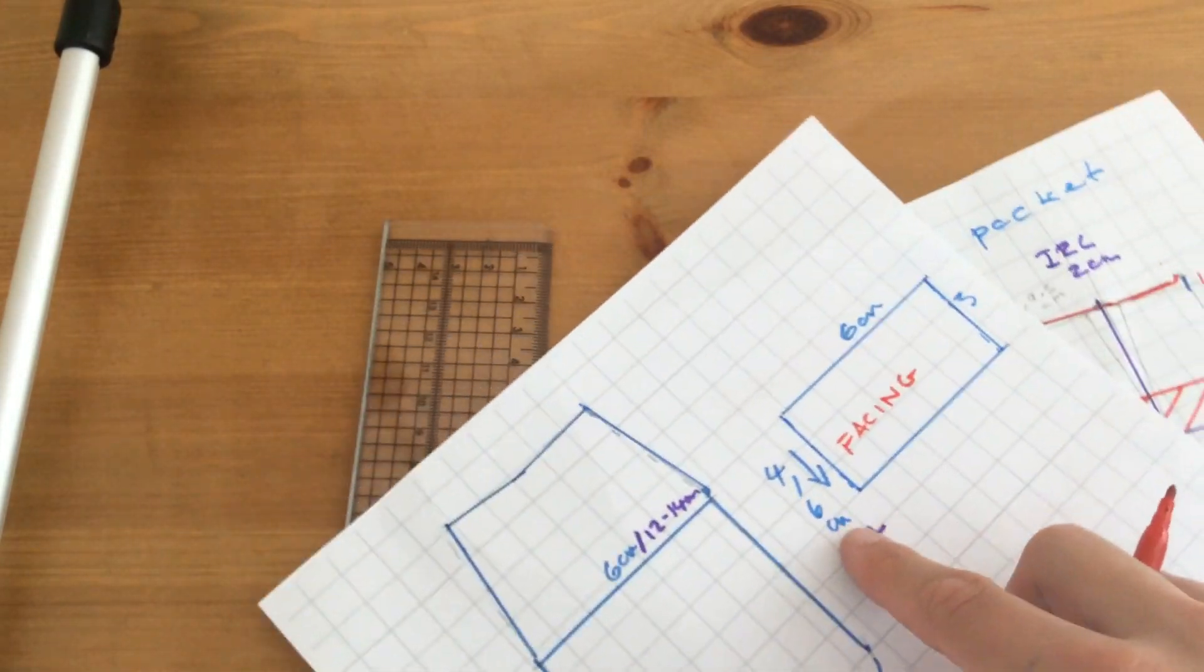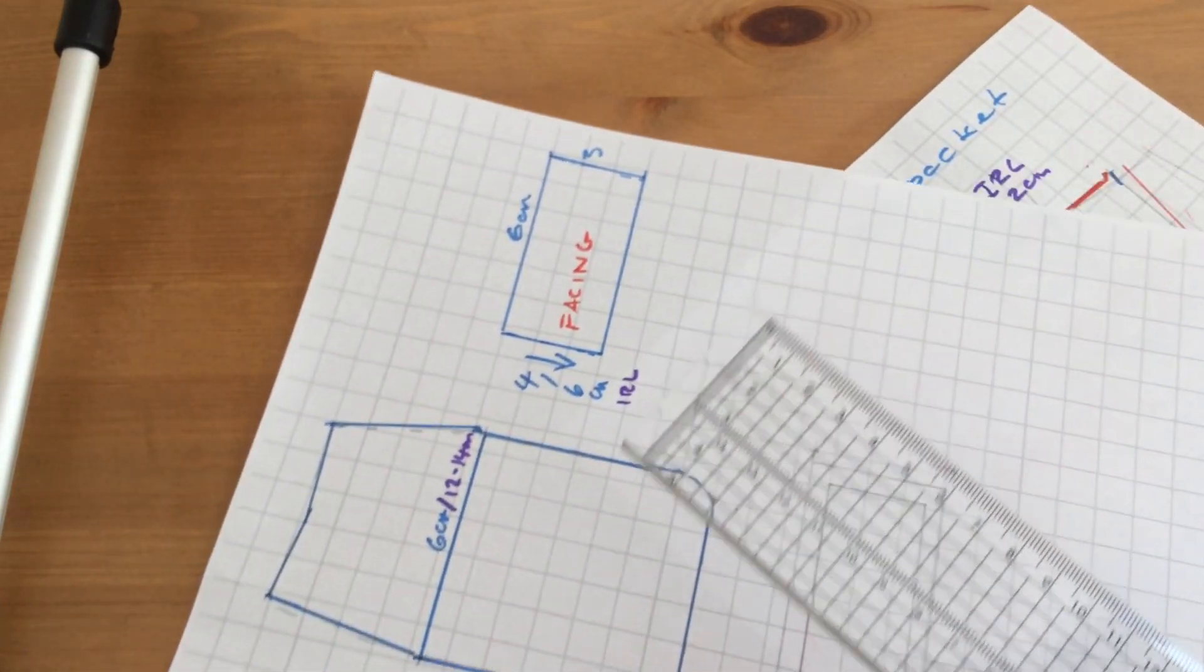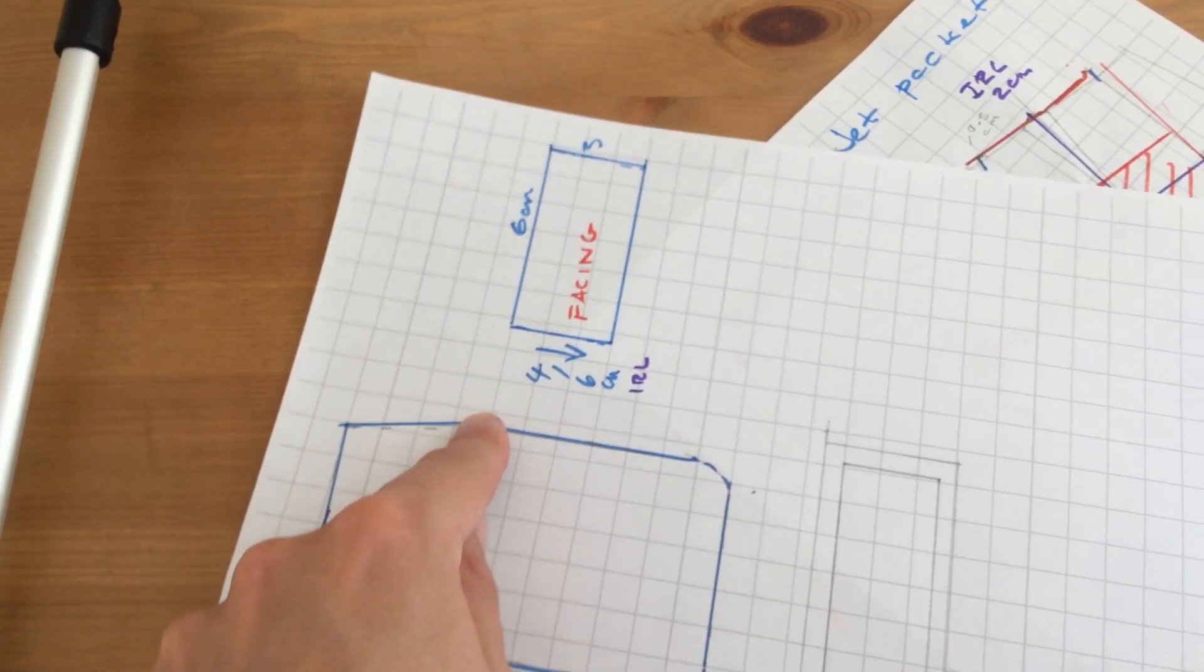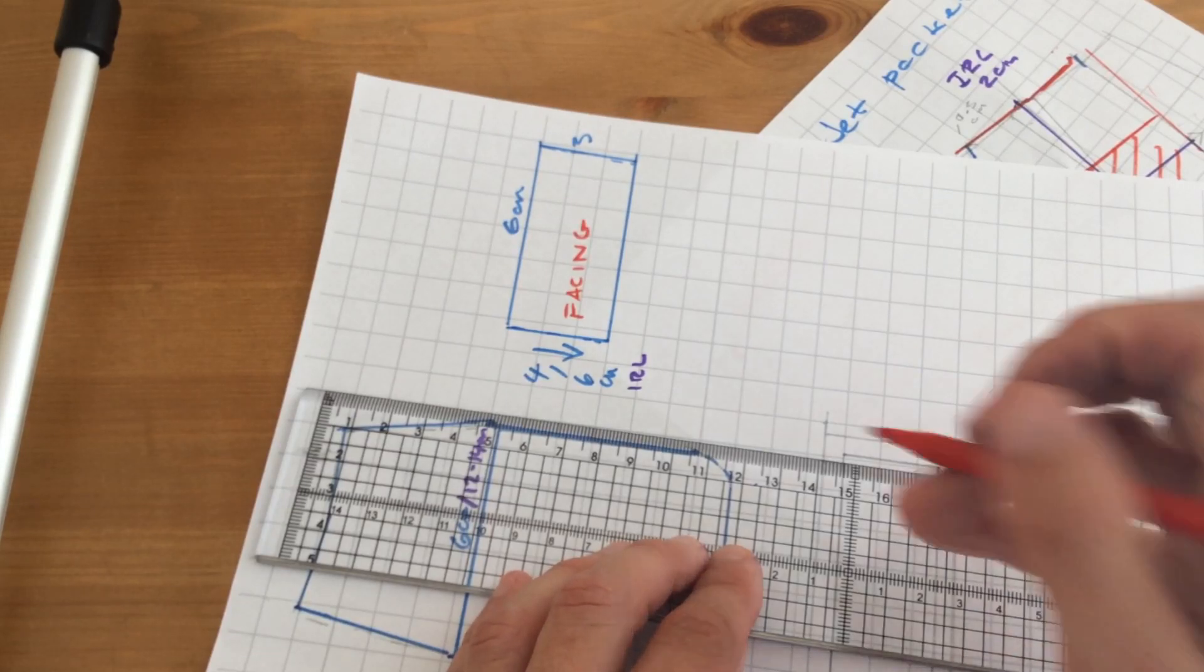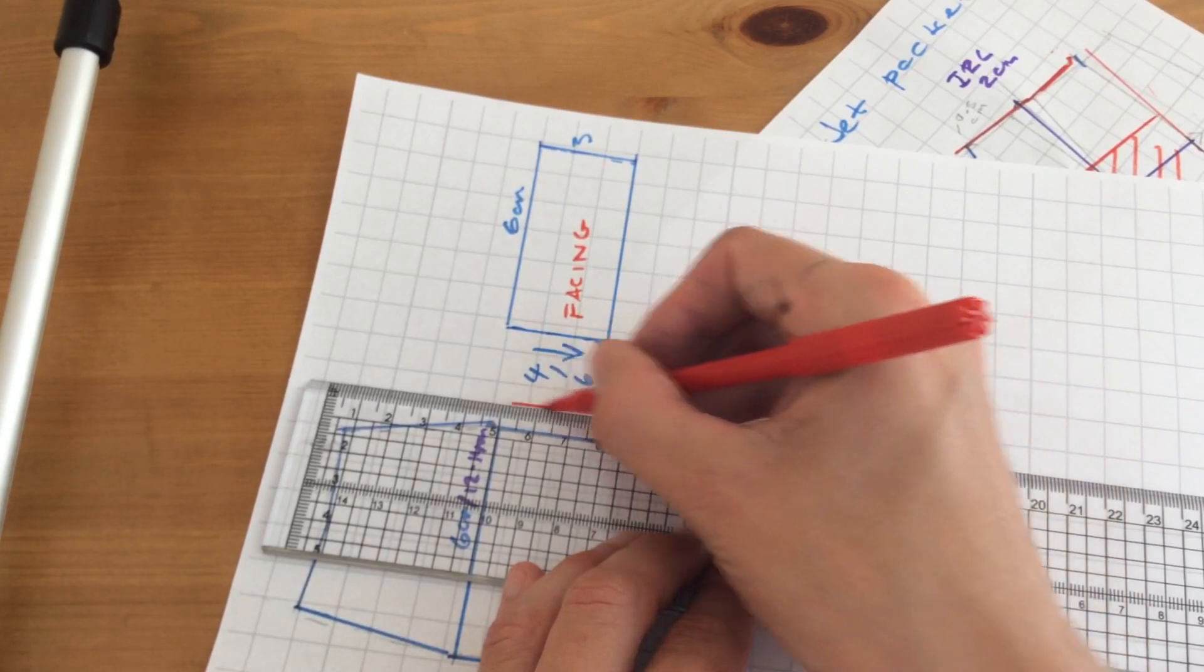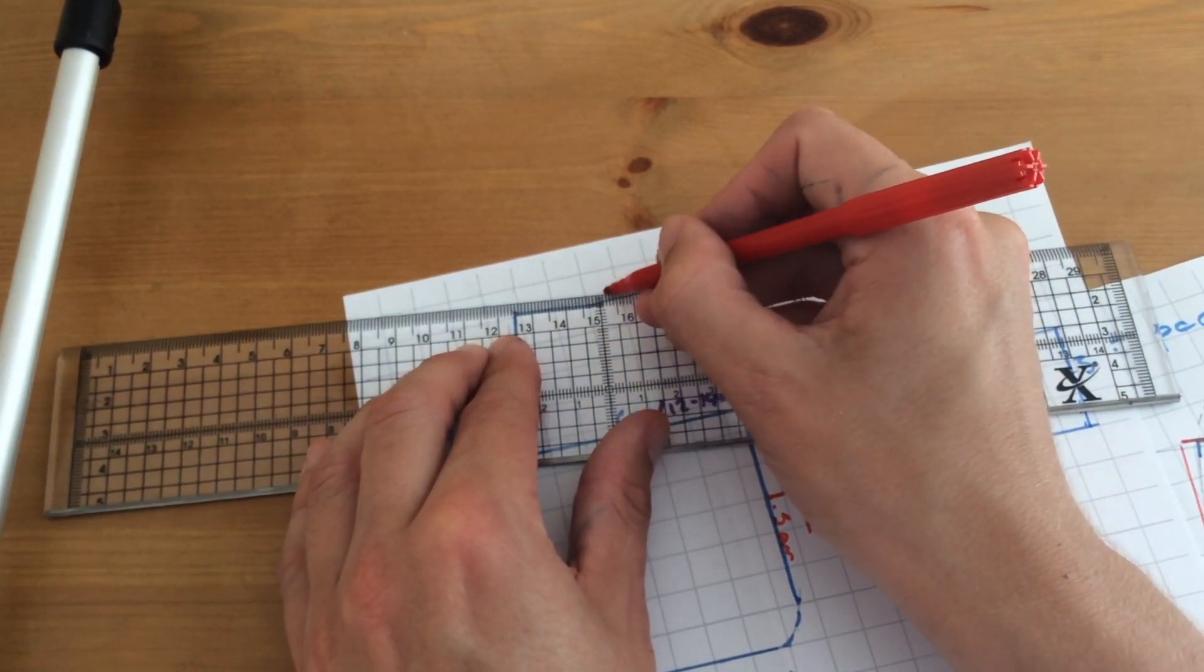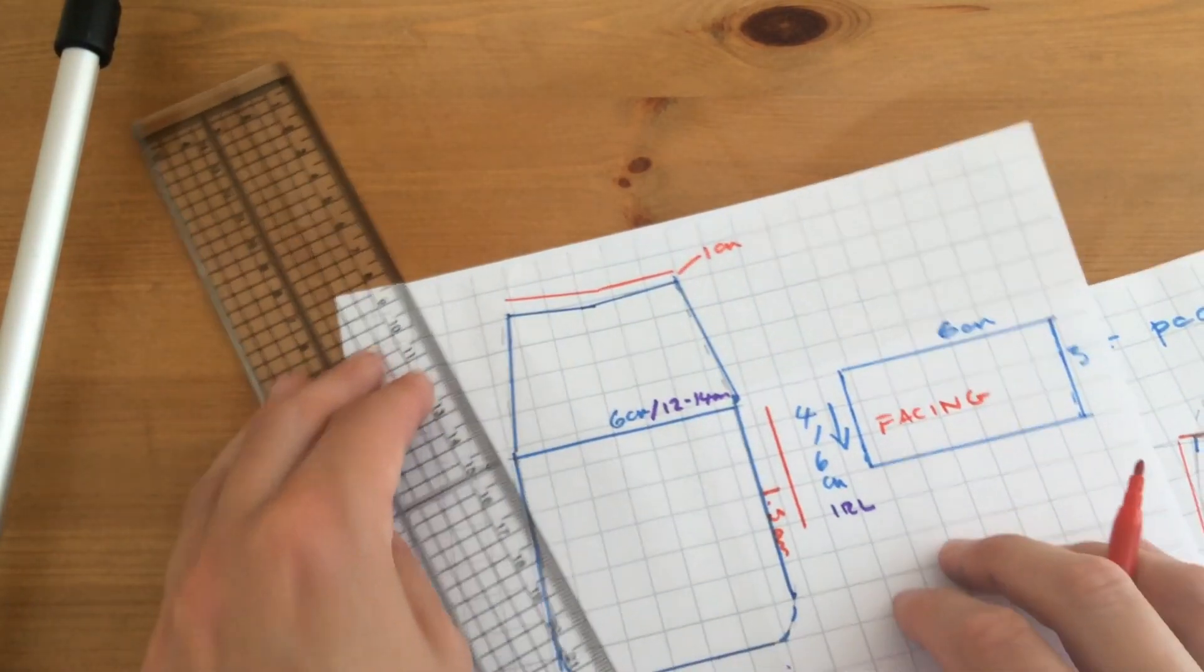If we look at this pattern piece now before we consider adding on seam allowance, we would need to think about the fact that it's still the same width as the jet. So if we were adding seam allowance on it, we would probably not just add one centimeter; we would probably add 1.5 all the way around, but on the top it would be one centimeter.